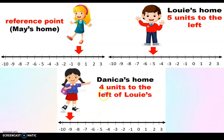Four units to the left of Louie's house. From here, four units — one, two, three, four. And this is Danica's house.